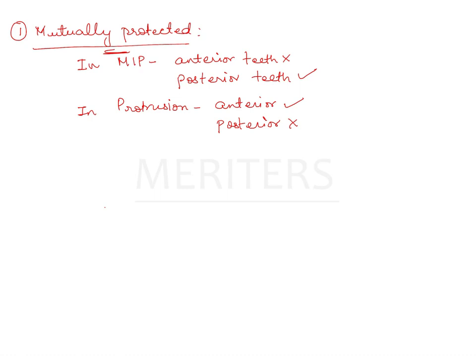The problem with mutually protected occlusion in removable cases: in protrusion the posterior teeth are not touching, so if you incorporate this feature with a removable partial denture, the denture is likely to lift or tip away at the most posterior natural tooth — the fulcrum line. For example, if only canines are present and contact is only canine-to-canine in protrusion, the denture will tip along that fulcrum line. Therefore, mutually protected occlusion should not be given when an RPD opposes a complete denture.